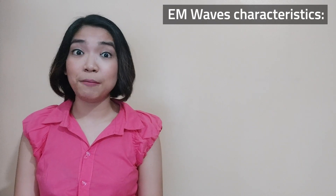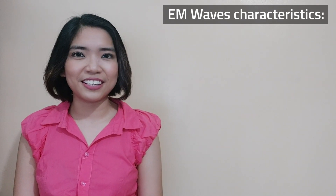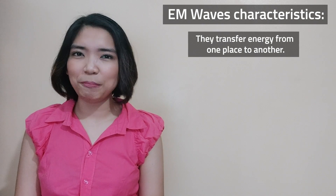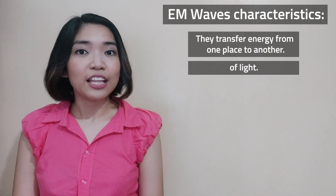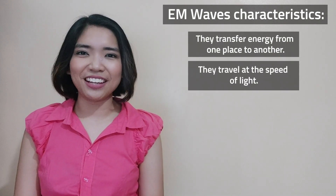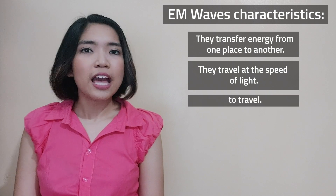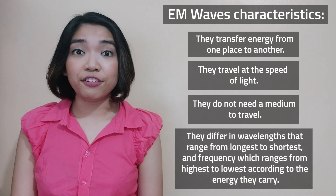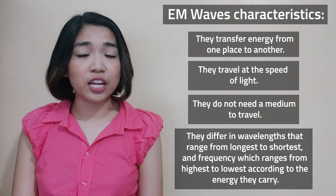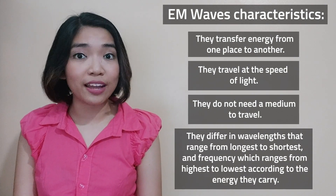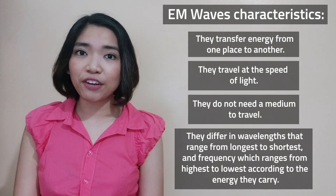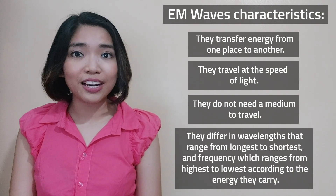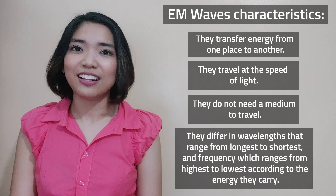EM waves exhibit these characteristics: They transfer energy from one place to another. They travel at the speed of light. They do not need a medium to travel. And they differ in wavelengths that range from longest to shortest, and frequency which ranges from highest to lowest according to the energy they carry.